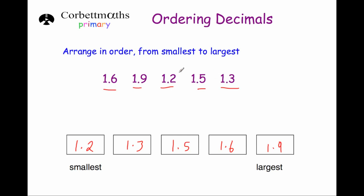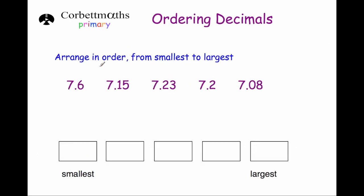That question was quite nice because all the numbers had one digit after the decimal point. Now let's look at a set of numbers where some have one digit and some have two digits after the decimal point. The question says arrange in order from smallest to largest: 7.6, 7.15, 7.23, 7.2 and 7.08.